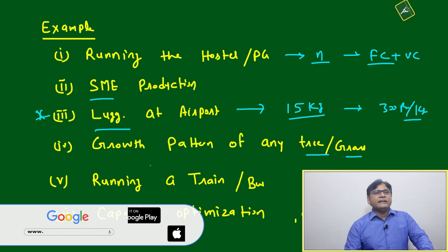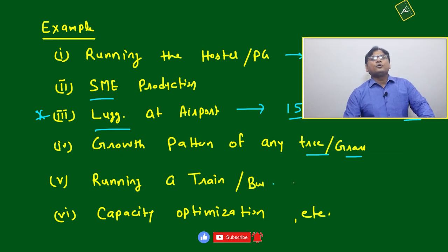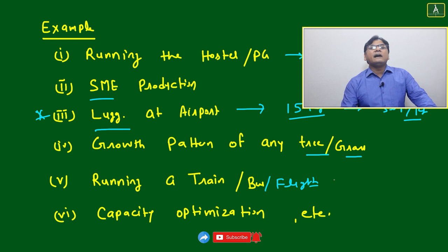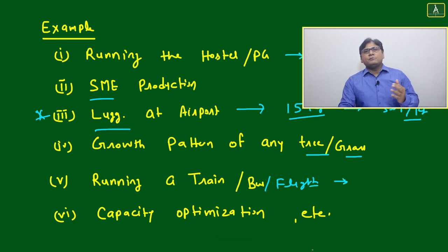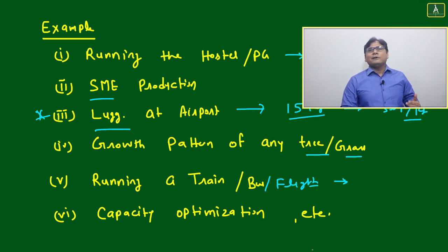After that, running a train or bus. You can add flight also here. Our consideration will be number of passengers. If you are running a bus between two cities, then your minimum cost will be there - like your fuel charges, person charges, toll tax, tire and wear, all things included. Some minimum cost will be there, that is your fixed cost that you can't reduce further.